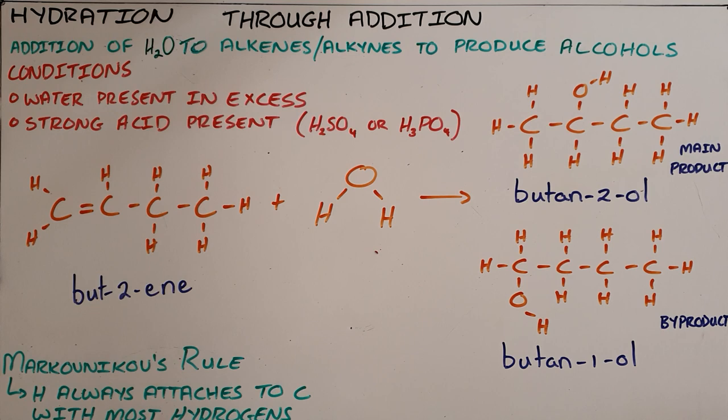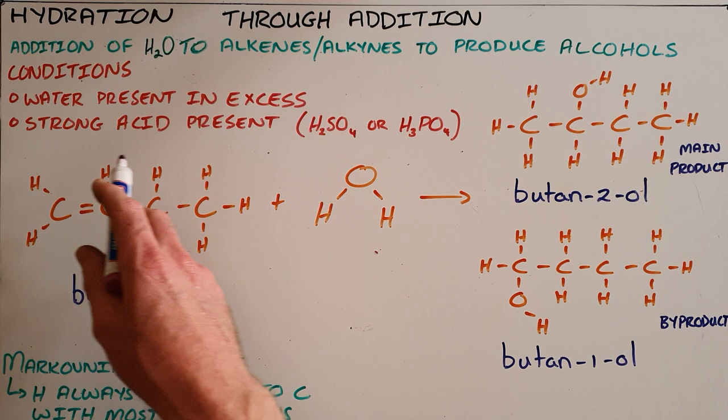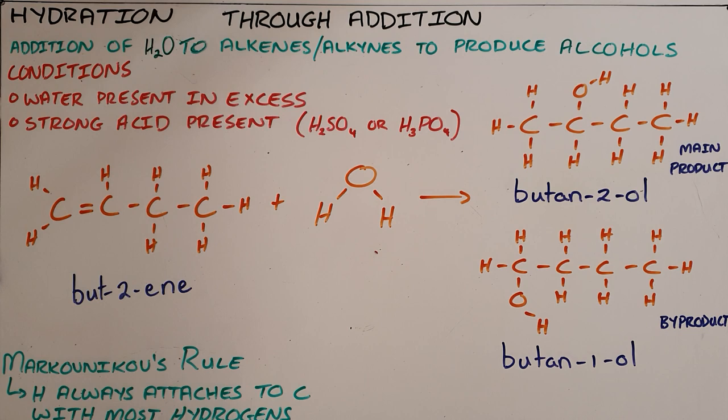Hydration through addition is the addition of water to an alkene or an alkyne to produce an alcohol. This can only happen on condition that there is water present in excess as well as a strong acid, that being either sulfuric acid (H2SO4) or phosphoric acid (H3PO4).